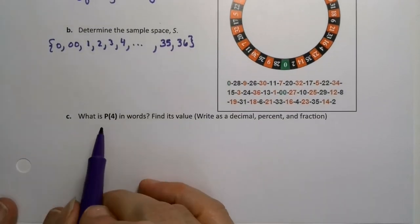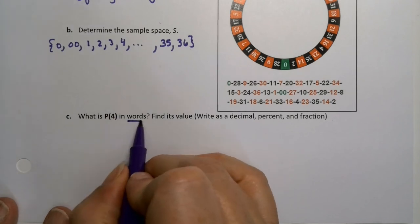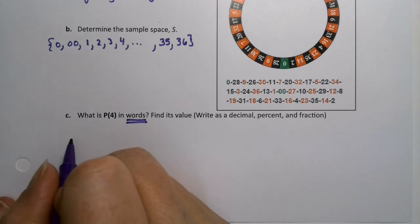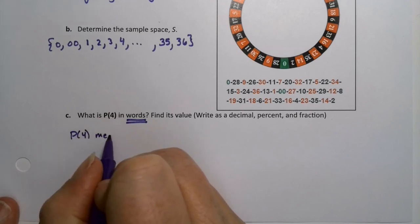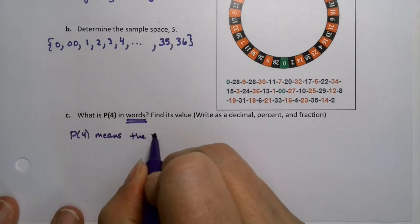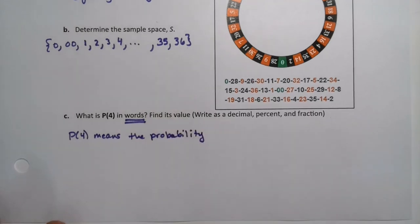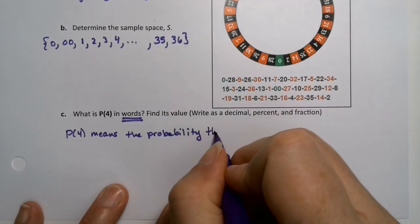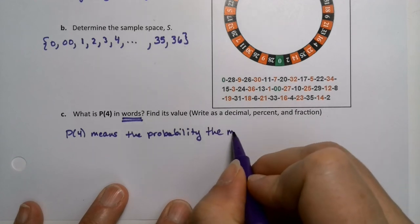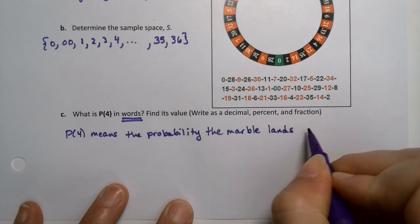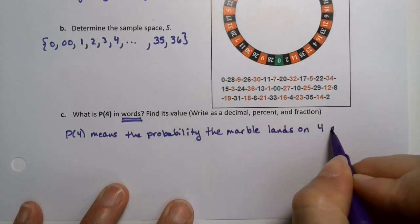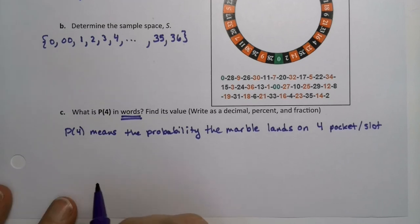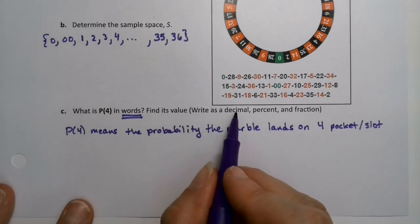What is P(4) in words and find its value? A lot of students will miss that piece. We'll ask what is the probability in words, and that means just write it out. So P(4) means, in words, the probability the marble lands on the 4 pocket or slot. They're sometimes called slots. What is the probability of 4? Find the value as a decimal, percent, and a fraction.